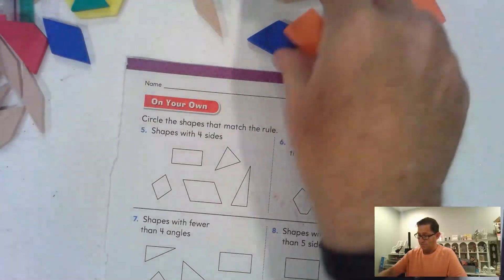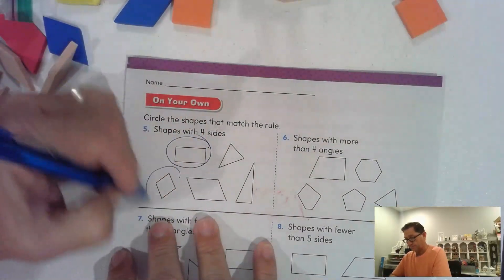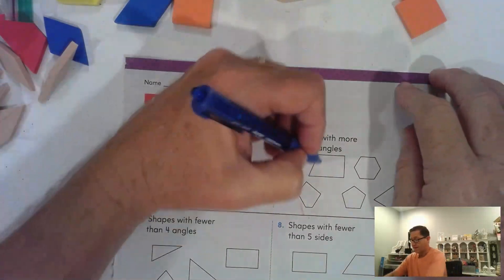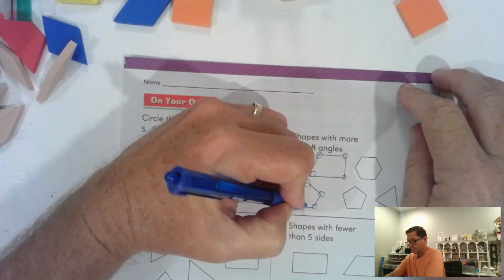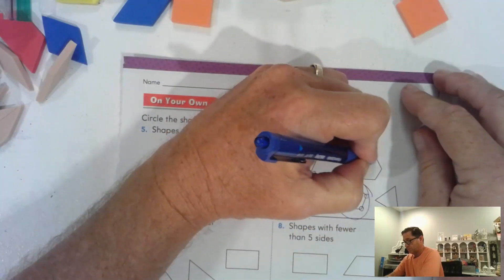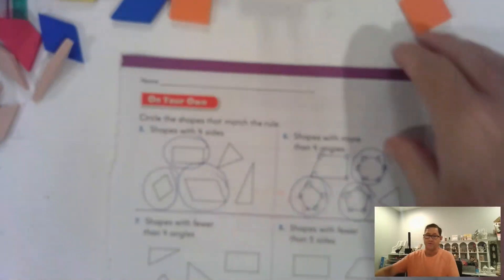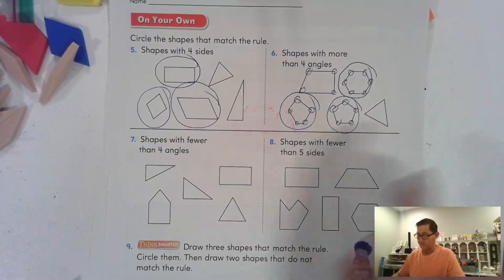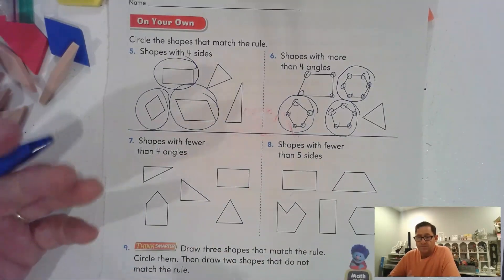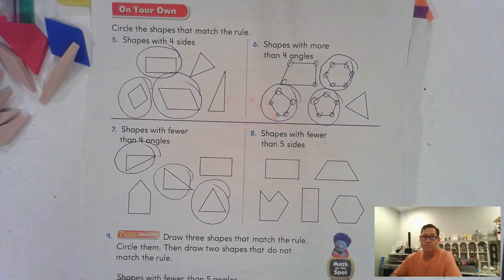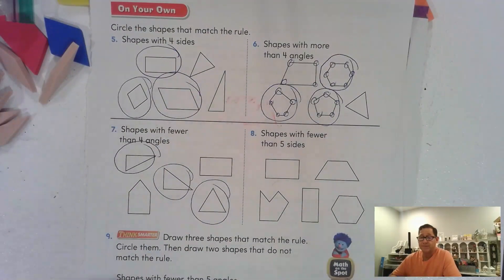Circle the shapes that match the rule — shapes with four sides: one, one, one — those four. Shapes with more than four angles: one, two, three, four — nope. One, two, three, four, five — yes. One, two, three, four, five — yes. One, two, three, four, five, six — yes. A triangle doesn't have more than four angles. Shapes with fewer than four angles — if it's less than four angles, it means it has less than four sides, so just triangles. Shapes with fewer than five sides: any four-sided figure, any three-sided figure.